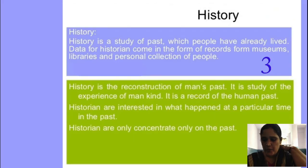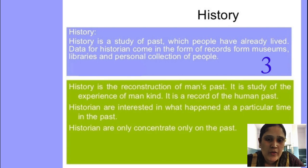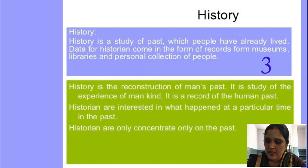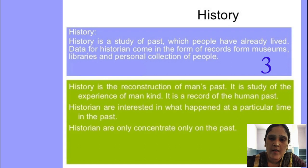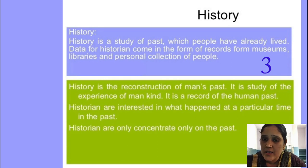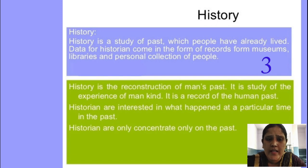The first relationship is between political science and history. History is nothing but the past — how mankind has developed and how they came into existence can be known only through history. When we talk about history, we know how the evolution of human beings came into existence and what type of cultural values were there and how they associated with different groups for development. These records can be found only through history, in museums, libraries, and personal collections.